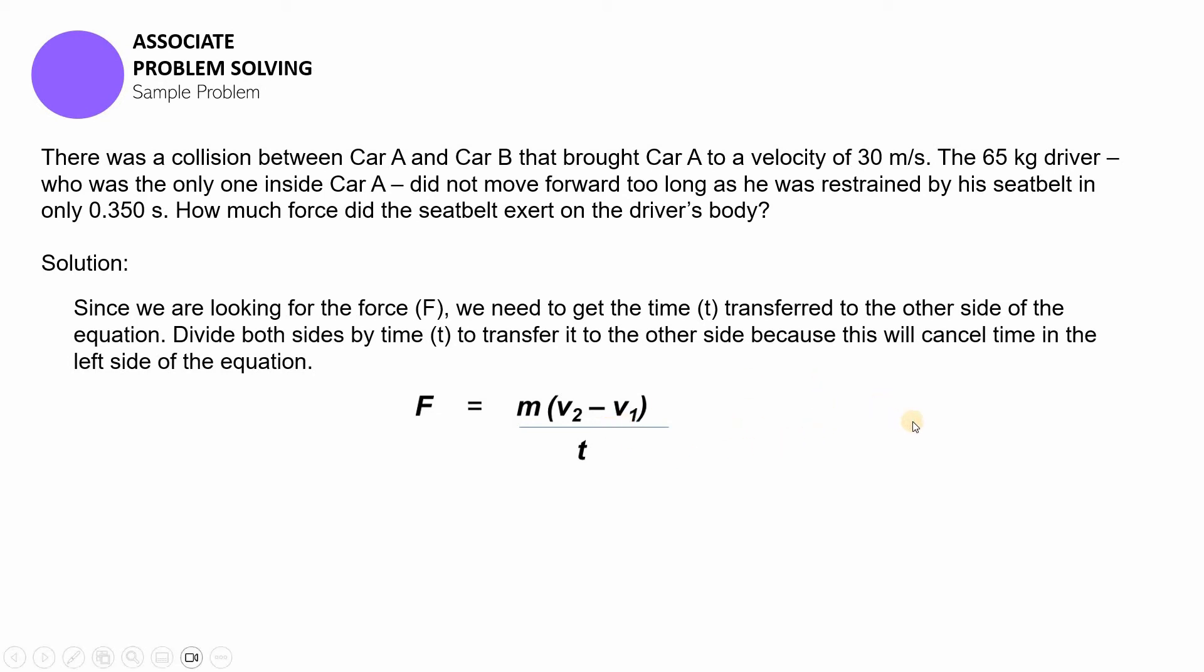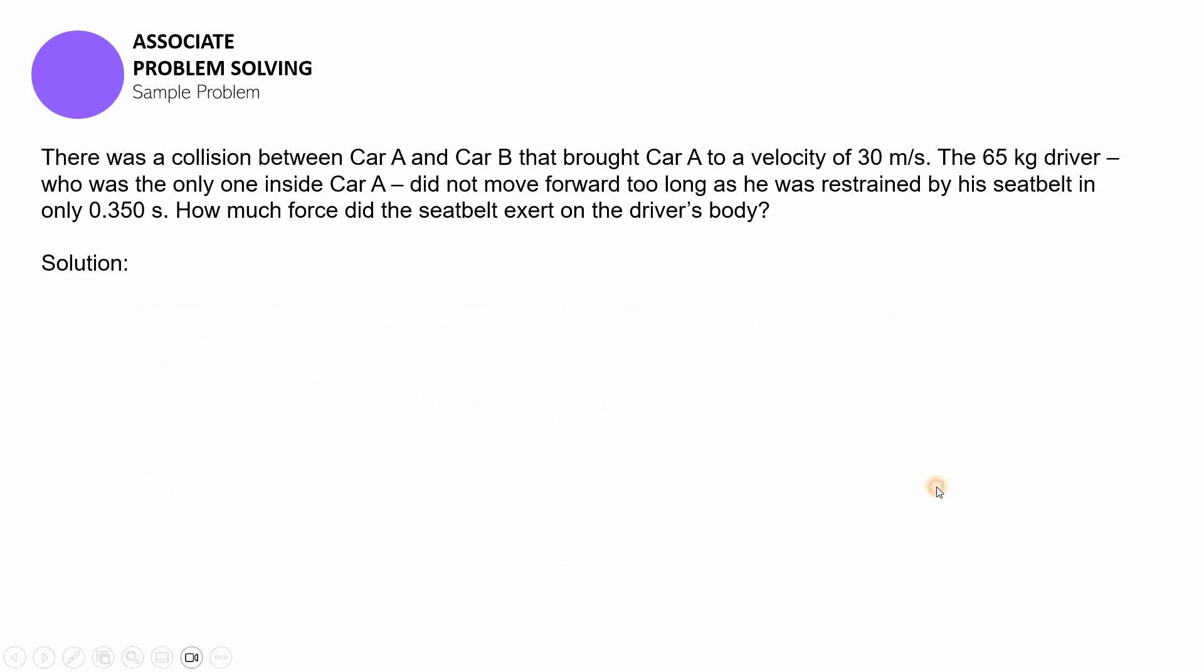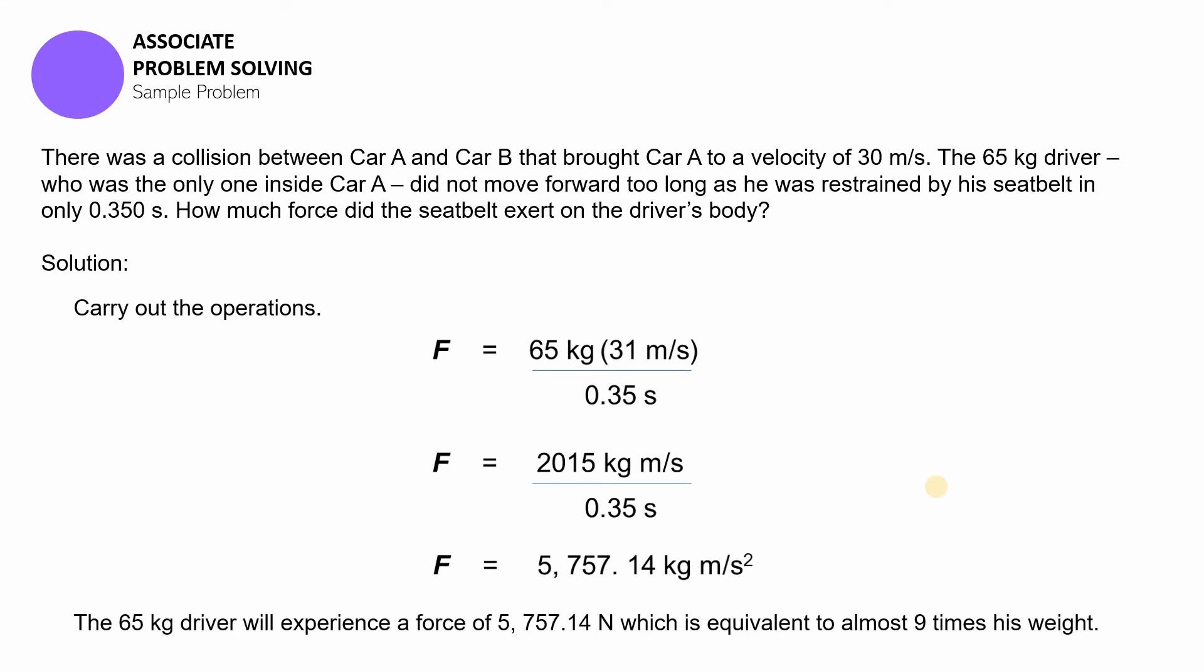Now you substitute the given factors on this formula, and you will be putting 65 kilograms, it will be multiplied to the difference of zero meter per second and 31 meters per second, divided by—and you will be dividing that product by 0.35. We continue our solution and we will be getting 5757.14 kilograms meters per second squared. That means that the total force of 5757.14 newtons was applied to the body of the driver, and that was actually almost nine times his weight.